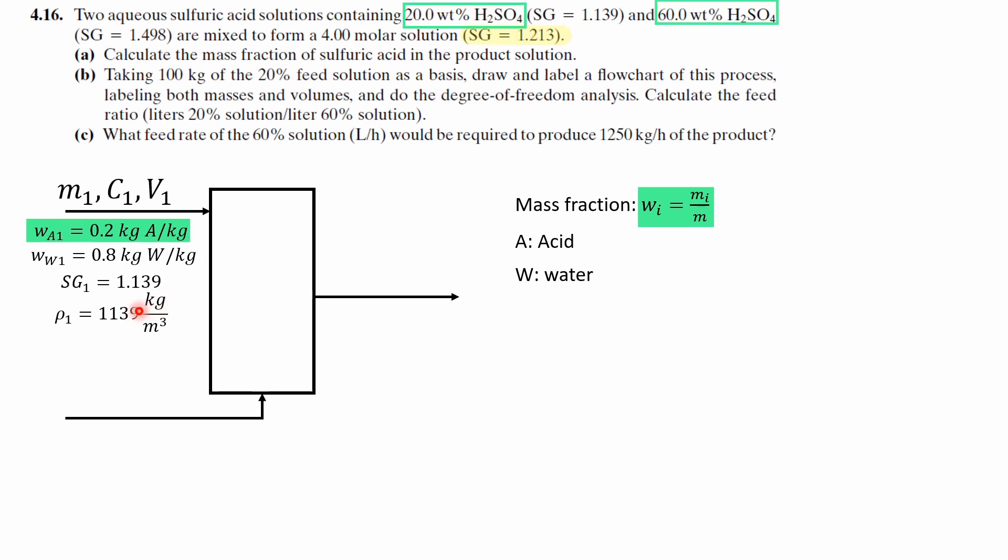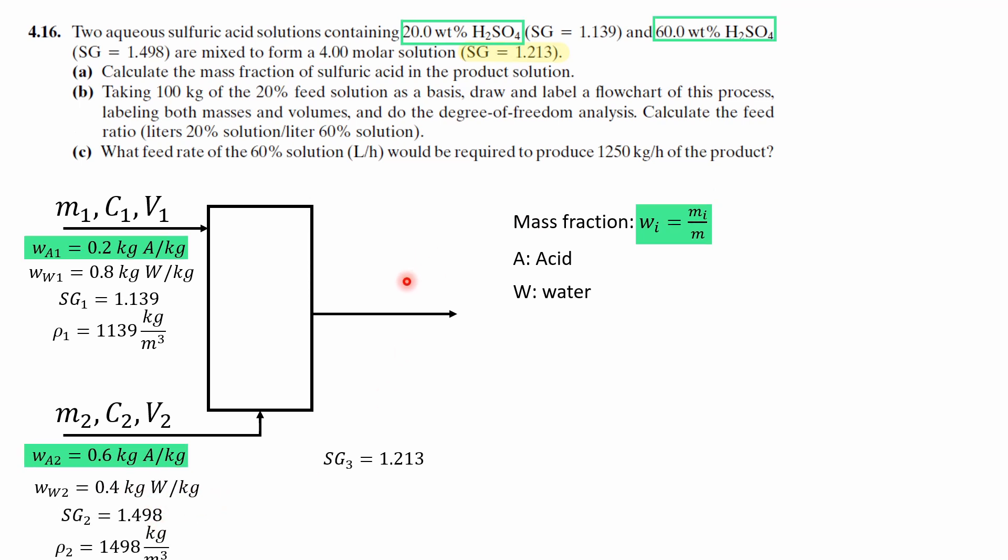And similarly for stream 2 we can label these streams with this mass fraction of 0.6 and the corresponding mass fraction of water with its corresponding density. And now finally for the third stream we know the specific gravity as 1.213 and this stream would be labeled stream 3 with corresponding volume, concentration, and mass fraction as well.